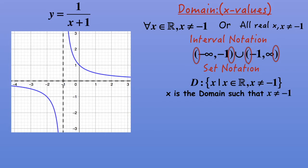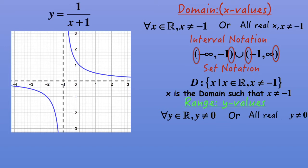And in set notation, we've got the domain: curly brackets, x, the values of x such that — vertical line — x is an element of the real numbers, x can't equal negative one. Close your brackets. Now let's think about the range — that's the possible y values. Well, y can also be anything except y can't equal zero, because that's an asymptote as well. Don't forget your horizontal asymptote in a hyperbola — there are two asymptotes: your vertical asymptote and your horizontal asymptote. So here we have all real y, except y can't equal zero.